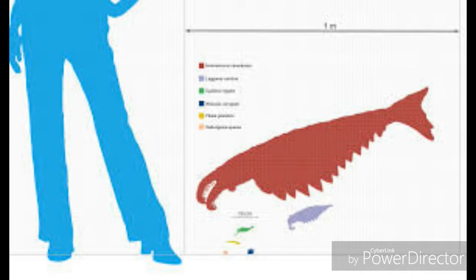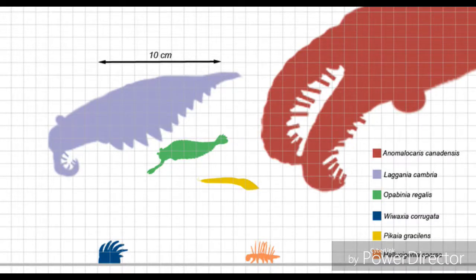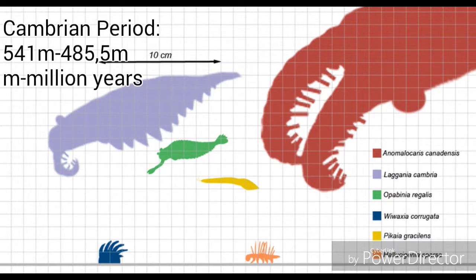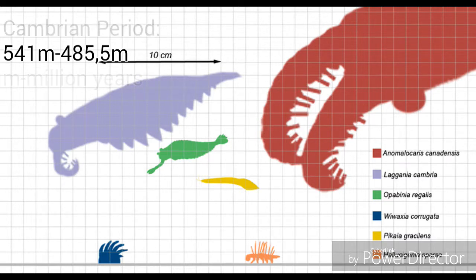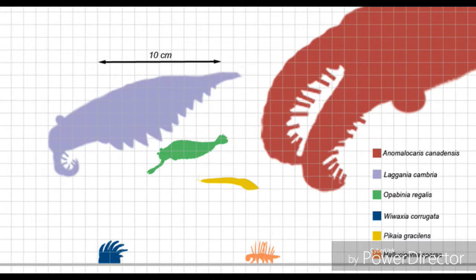Anomalocaris reached ranges of 70 cm to about 1 meter long. This may sound small today, but during the Cambrian period it was by far the biggest predator of its time.